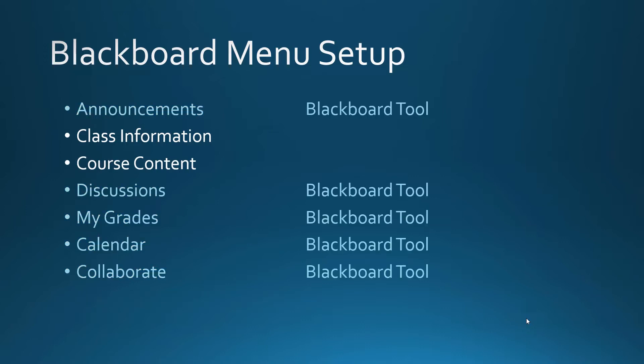As I'm looking at my menu, some of these items are going to be Blackboard tools already built into Blackboard — I've highlighted those in blue. The ones in yellow are going to be content folders, where most of your information goes. This is where you'll include a syllabus, a schedule, and in course content you'll have notes, recorded lectures, assignments, and tests. The vast majority of material you put into Blackboard will happen in these content folders. Now let's go back to Blackboard and start setting these up.